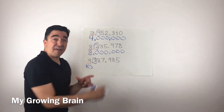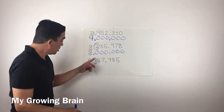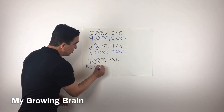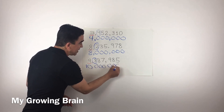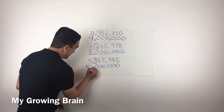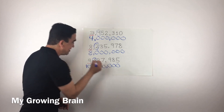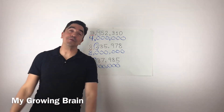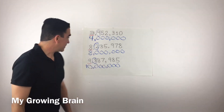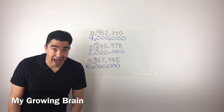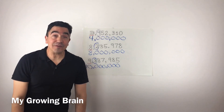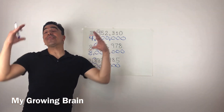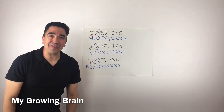All the digits after become zero — one, two, three, four, five, six. Don't forget the comma. So, nine million, eight hundred eighty-seven thousand, nine hundred eighty-five rounded to the nearest million is ten million. And that concludes our lesson.